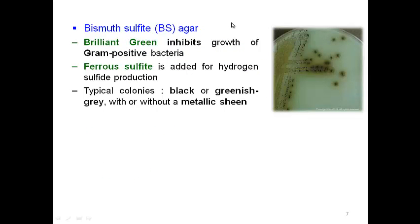The current system uses three different selective agars: BS, XLD, and HE agar. Each agar has different selective agents. BS agar has brilliant green that can inhibit gram-positive bacteria. Ferrous sulfate is added for hydrogen sulfide production, producing a characteristic black center. Typical colonies are black or greenish-gray, and sometimes they have a metallic sheen.